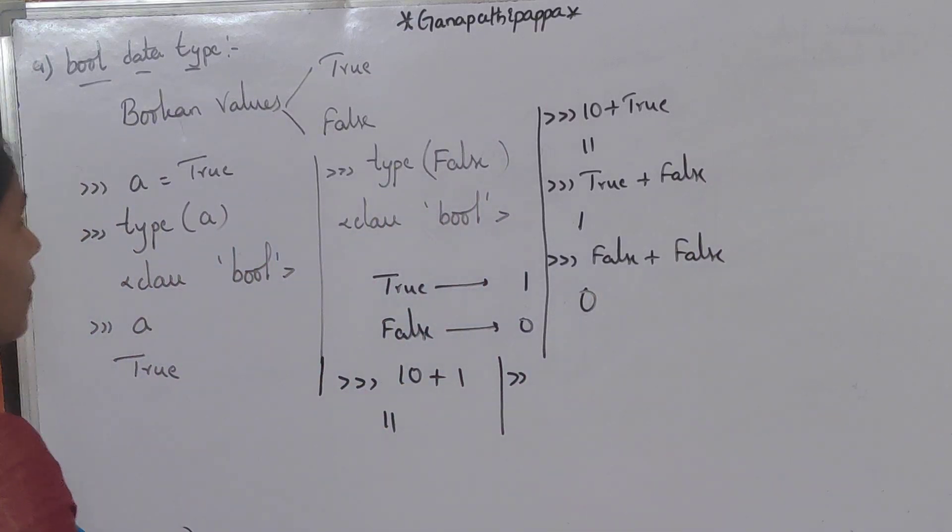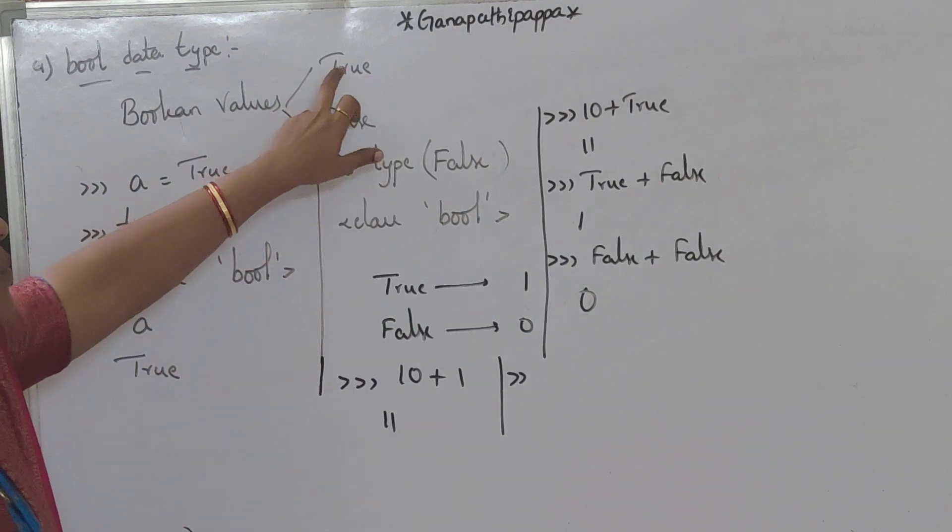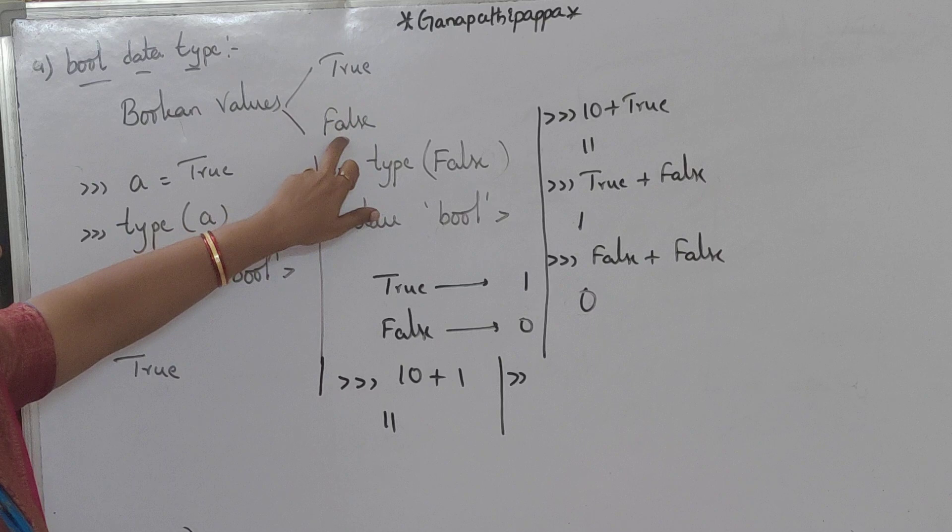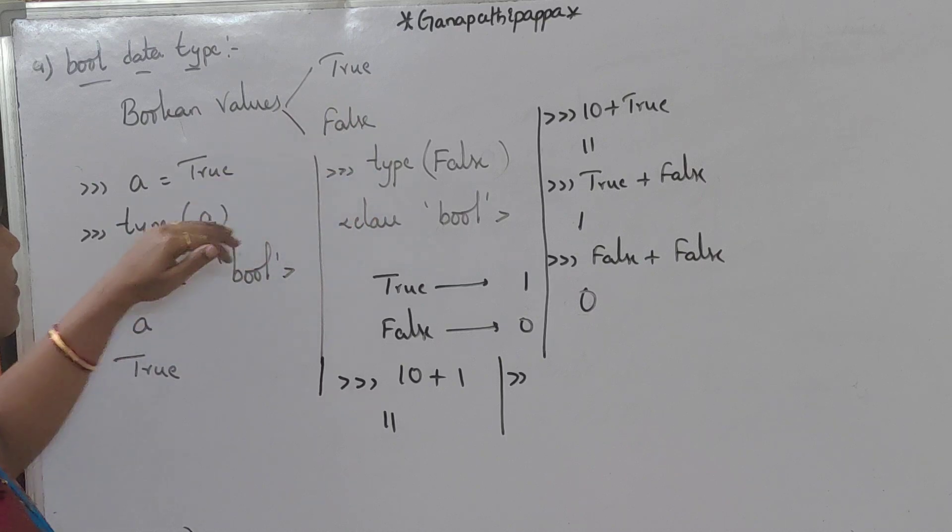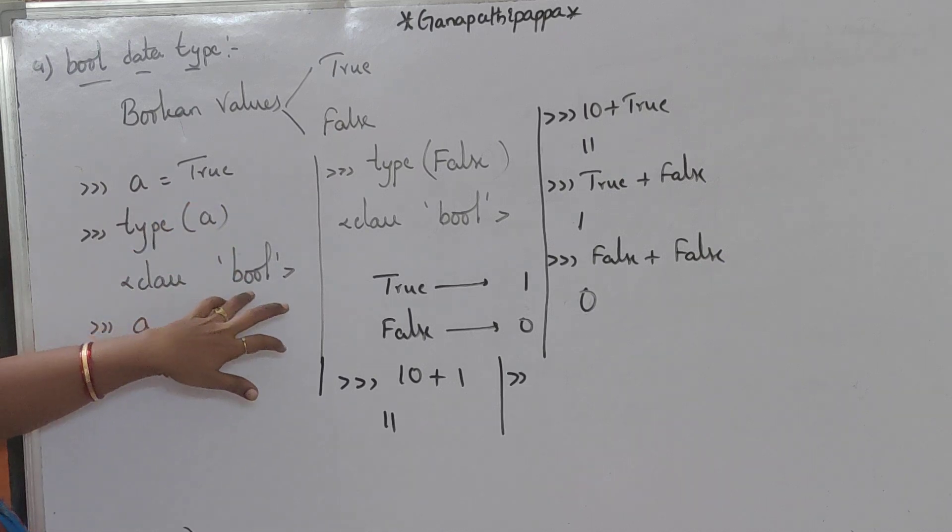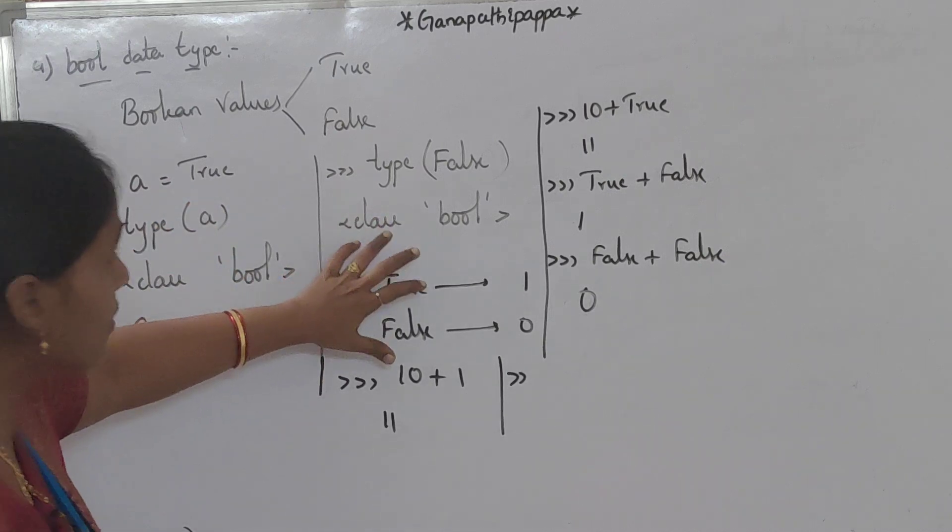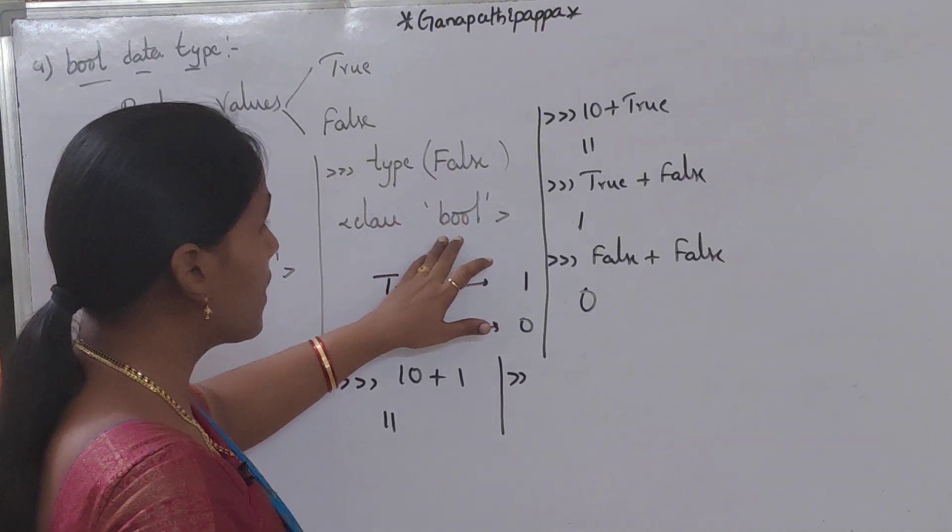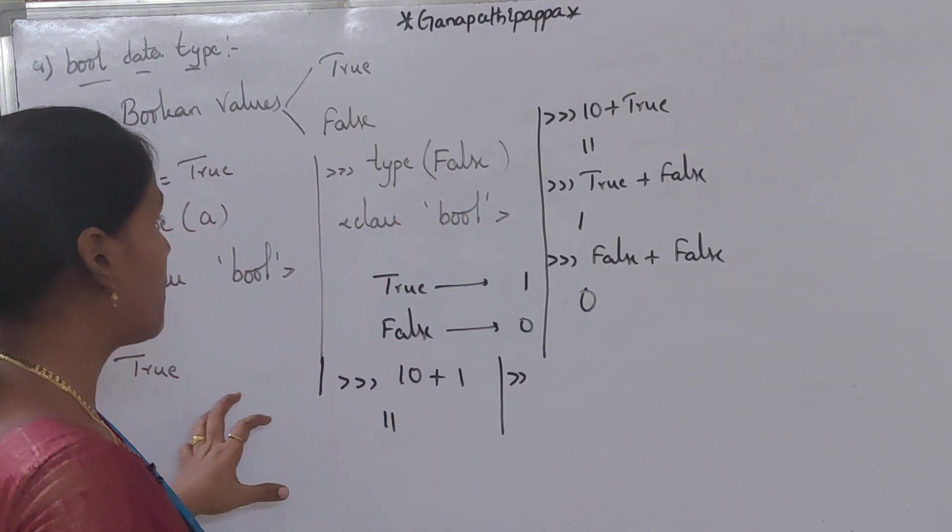This is the boolean data type. Boolean values are true and false. A is equal to true. We will check type and we will get bool, and false is also a bool type. This is the boolean data type.